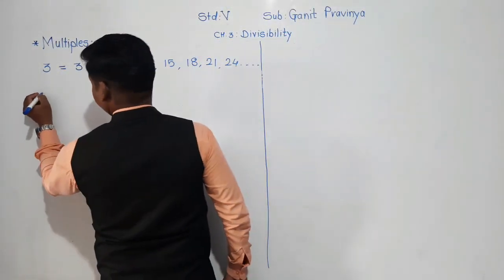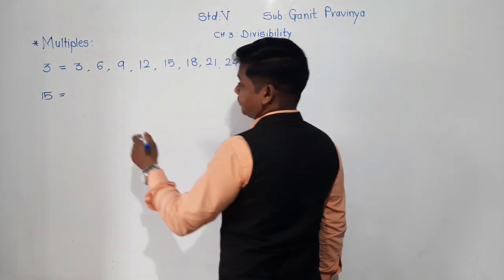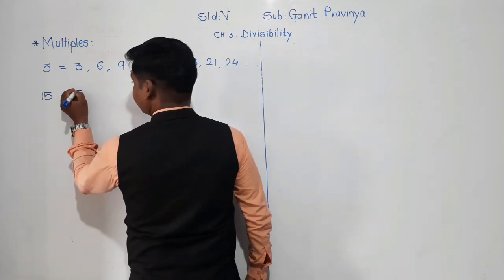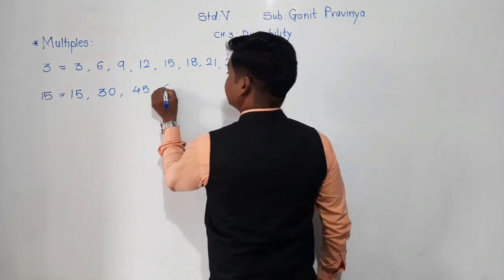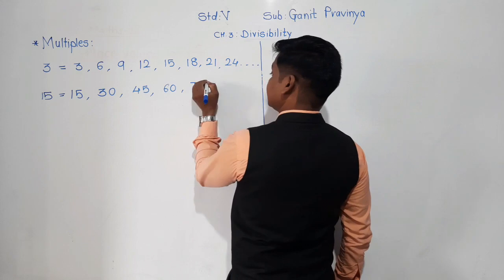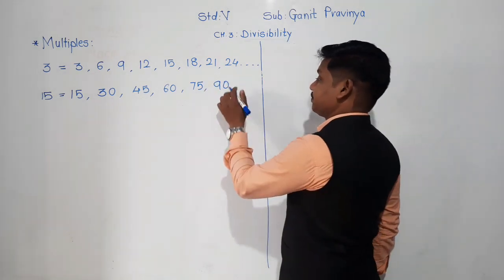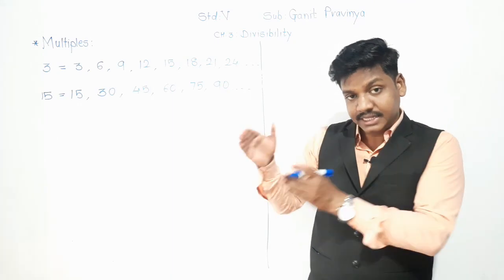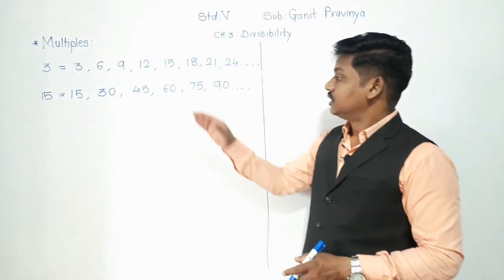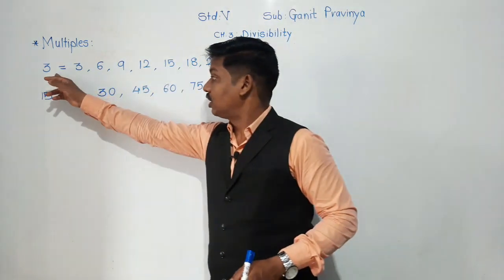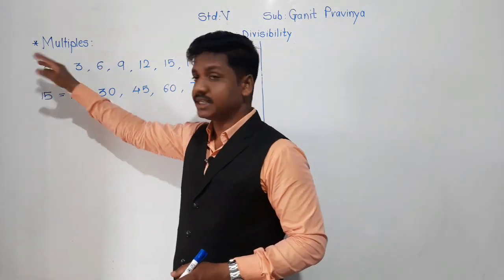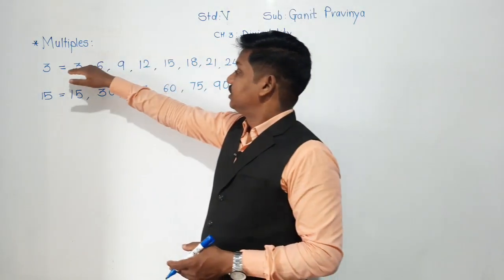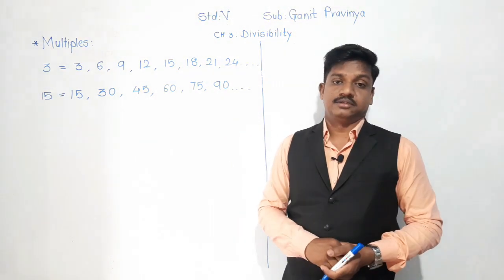Let us take another example — 15. Which are multiples of 15? You have to recite the tables: 15 ones are 15, 15 twos are 30, 15 threes are 45, 15 fours are 60, then 75, 90, and so on. Multiples are uncountable. Factors are limited because they are smaller than or equal to that number, but multiples are greater — either equal to or greater — exactly opposite of divisors.